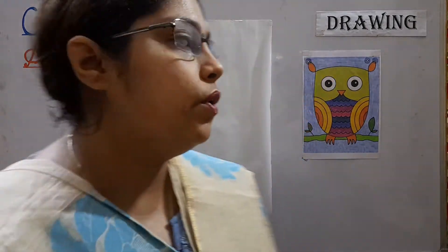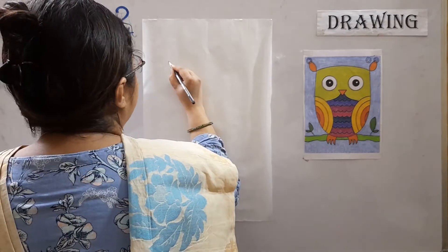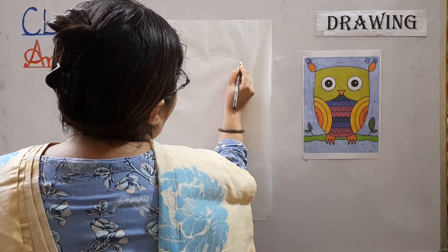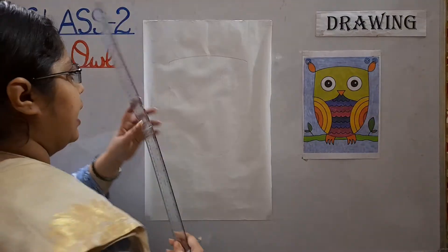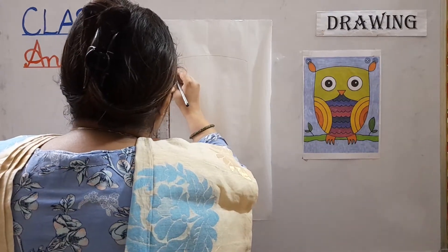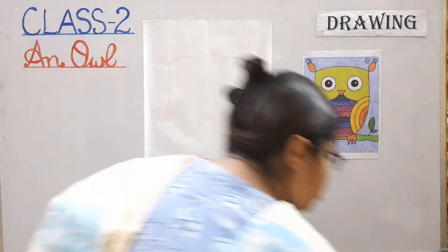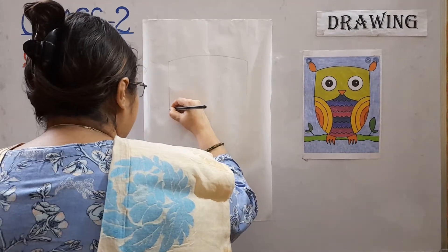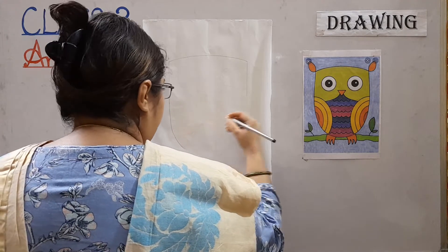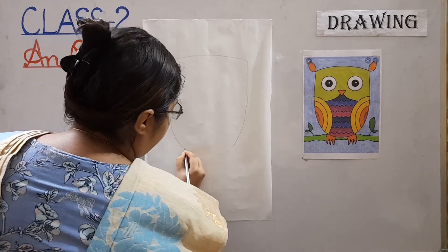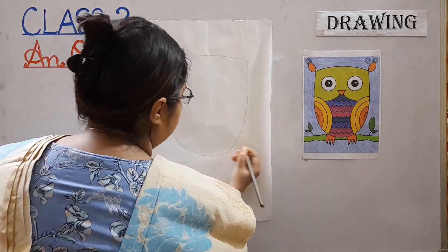Let's start with sketching first. Please take a pencil and draw in your drawing copy. First of all we are going to make the top of the owl. You can take help of the scale to draw a straight line on both sides. You don't have to draw too big. Now we have to make a U — we are going to make an alphabet U. Try to go in one flow so that your owl is complete.